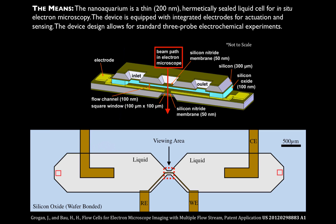We are very familiar with liquid cells. We use a home-brewed device created by Grogan and Bau at the University of Pennsylvania that we call the nano aquarium — a completely sealed device bonded using wafer bonding and standard lithography techniques. We also have electrodes for sensing and probing, which we won't need to describe for radiolysis, but they can be used in conjunction with the beam effects that we see.